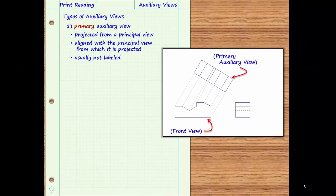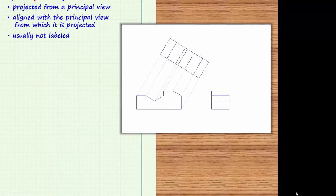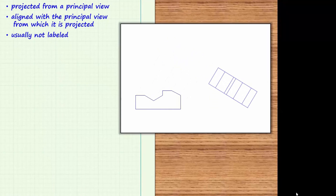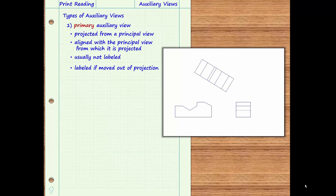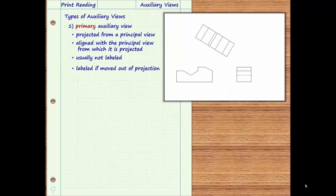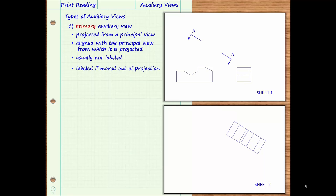Primary auxiliary views are usually not labeled. It is expected that the print reader can interpret the view based only on its location and orthographic relationship to the principal or regular views. Occasionally, a primary auxiliary view may be moved out of projection in order to save space on the print. In this case, a viewing plane line should be used and the auxiliary view should remain oriented to agree with the associated viewing plane line. Also, the auxiliary view must be labeled appropriately so that it can be easily identified and associated with the viewing plane line. The auxiliary view may be drawn on a separate sheet of the drawing, which requires a note directing the reader to the sheet where the primary auxiliary view is located.